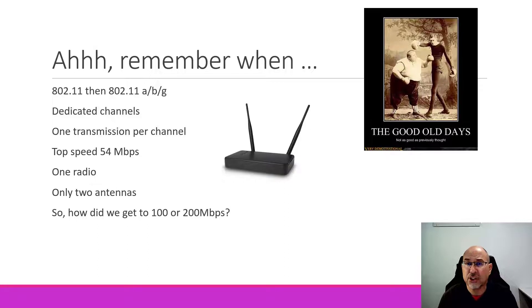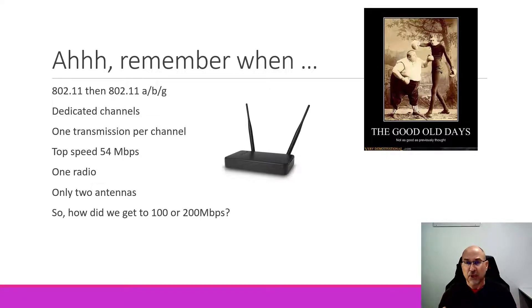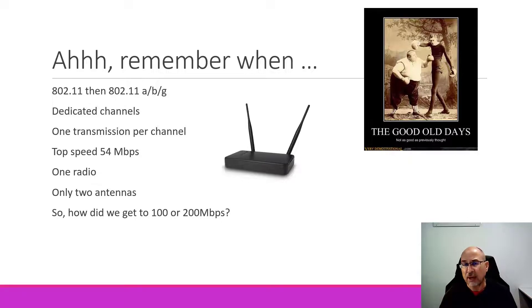They all sort of shared one thing in common: whatever was going on on a particular channel, that's what was going on. Whether you're doing direct sequence spread spectrum with the chipping code, or frequency hopping spread spectrum with Gaussian frequency shift keying, there was really one transmission per channel. The channel size changed from very small up to 20MHz channels, but we had a top speed of 54MHz — and that was one of the limits we kept running into.